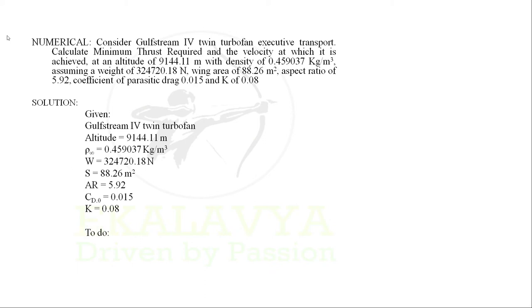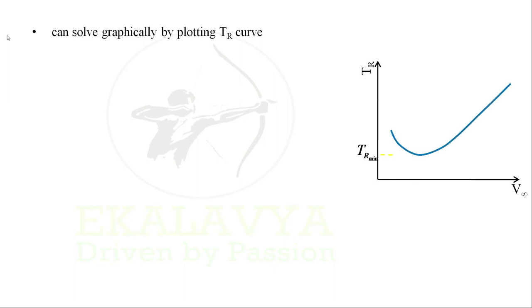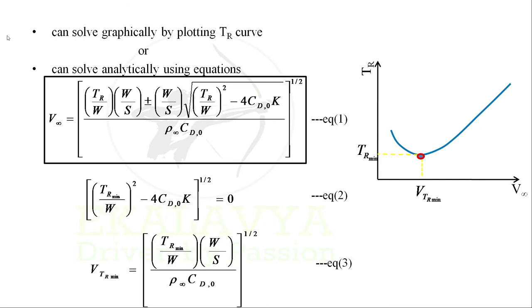With the data extracted, the next step is to identify what is asked in the question and to establish the procedure. Here we need to calculate minimum thrust required, T_R minimum, and we need to calculate velocity at minimum thrust required, V_TR minimum. The problem can be solved graphically by plotting the T_R curve as discussed in the previous video lecture, but that procedure is too lengthy. We can also solve this problem by an analytical approach using the equations obtained in video lecture 16.